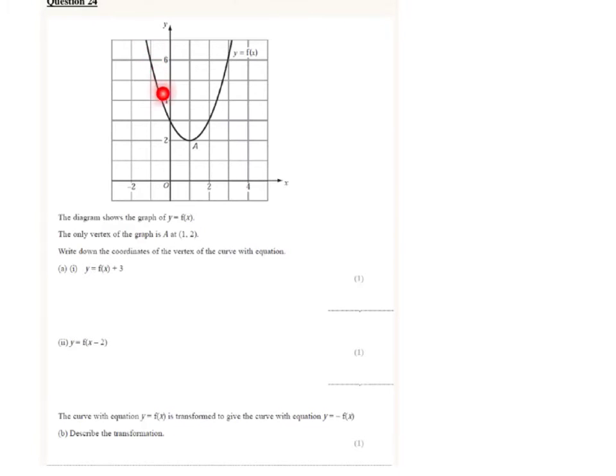So we've got a diagram showing us a quadratic equation, but we're just told it's y equals f of x. We're told that the only vertex of the graph is at 1, 2, that's where it turns, 1, 2.